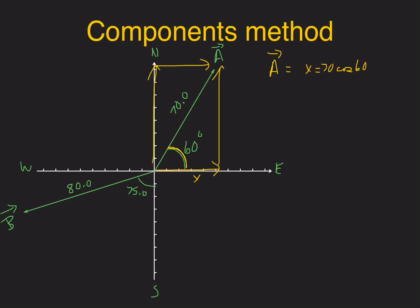The y component would equal 70 times the sine of 60 degrees. If I do 70 cosine of 60, that comes out to be 35.0. And 70 sine of 60 comes out to be 60.6. I have to make sure they have the right signs: x would be a positive x, and y would be a positive y, so I can leave them just like they are.